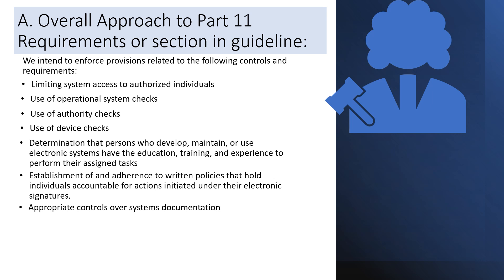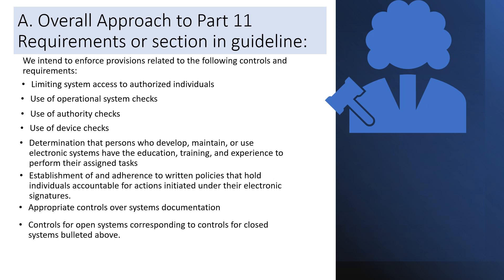Next is appropriate controls over documentation. Appropriate controls should be in place to ensure that documentation related to information systems is accurate, secure, accessible, and up to date. This may include auditing and monitoring, backup and disaster recovery, regular reviews, encryption of data, change management, and training and awareness of the system to users. Next is control for open systems, which should have even more controls than closed systems. Finally, electronic signature requirements must be fulfilled.